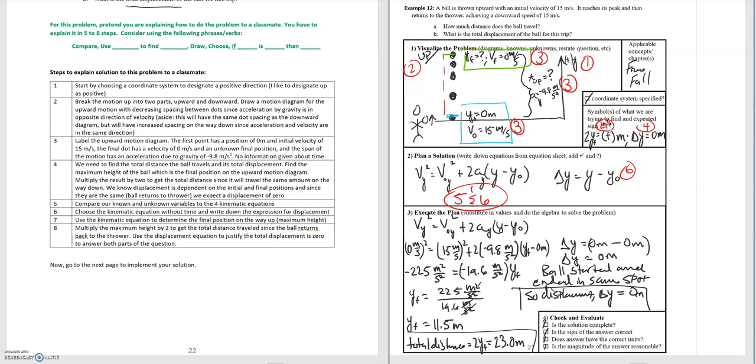Moving on to 7. Use the kinematic equation to determine the final position on the way up. So the maximum height. And so that's where we used our kinematics equation. We started from our known equation and then we substitute in all of our variables and we determine a final position of 11.5 meters. So it reaches a maximum height of 11.5 meters. So this is step 7 getting to this point here.